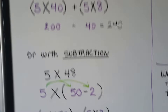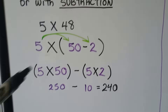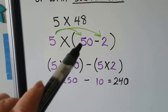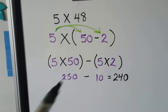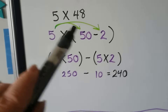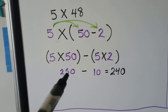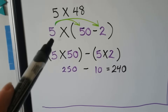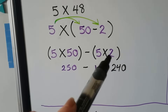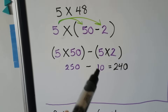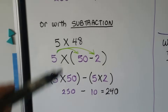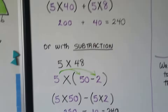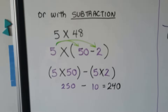We can also use the distributive property with subtraction. Since 48 is just 2 less than 50, we can represent 48 as 50 minus 2. Then we multiply 5 times 50, which is 250. We have a subtraction sign, so we subtract 5 times 2, which is 10. We get 250 minus 10, which is 240 — the same answer as breaking 48 into 40 plus 8. So we can use either addition or subtraction.